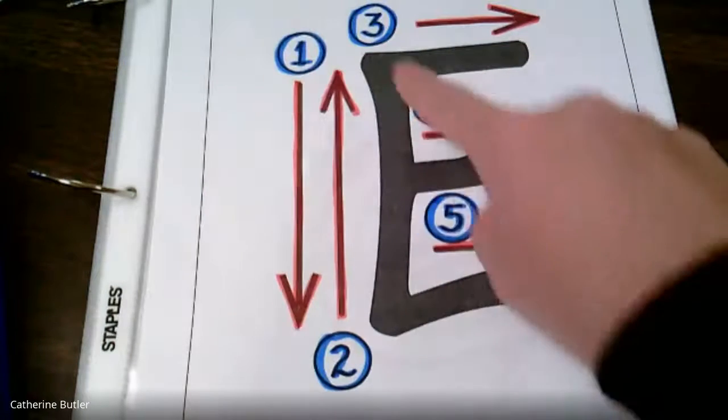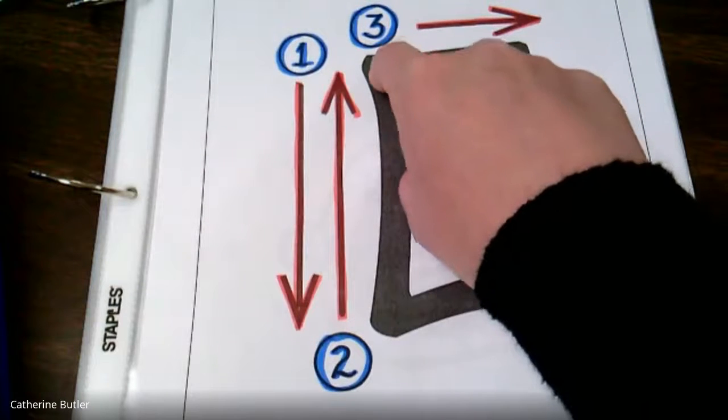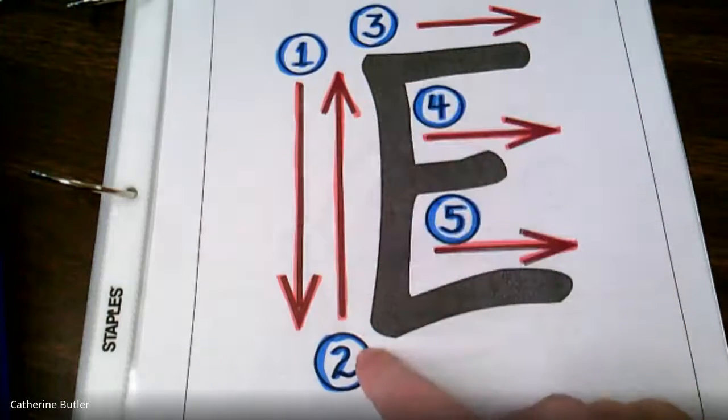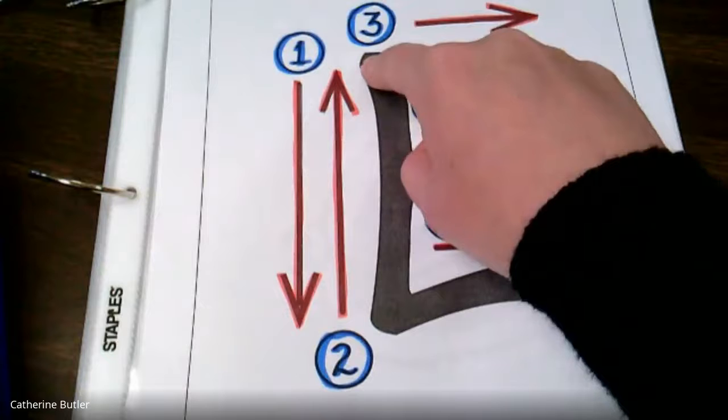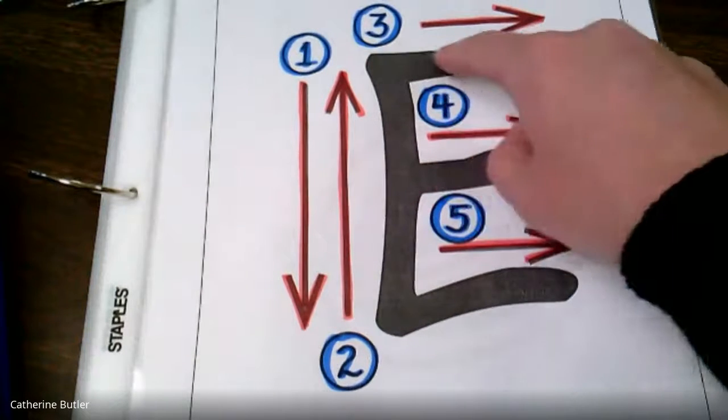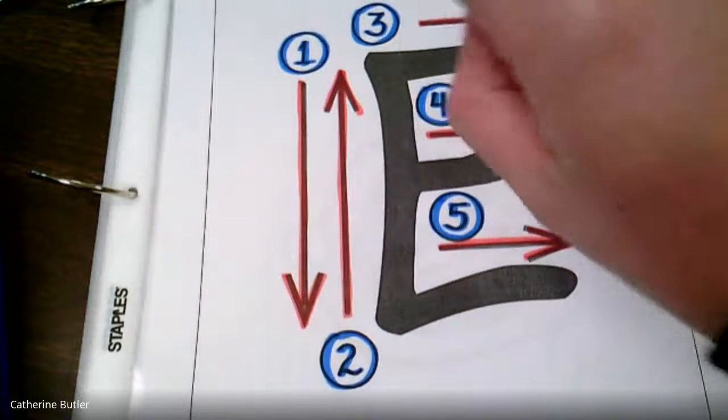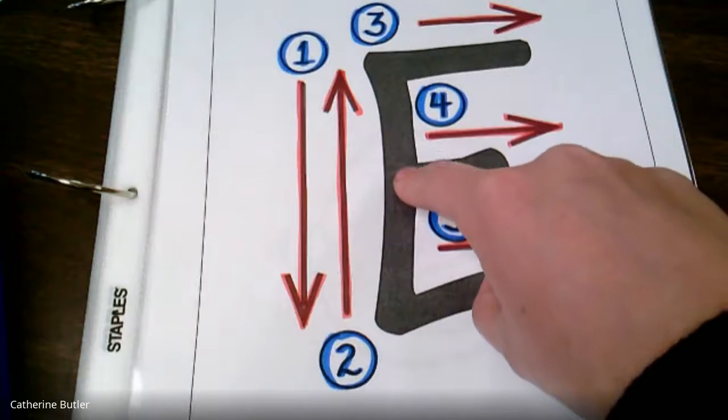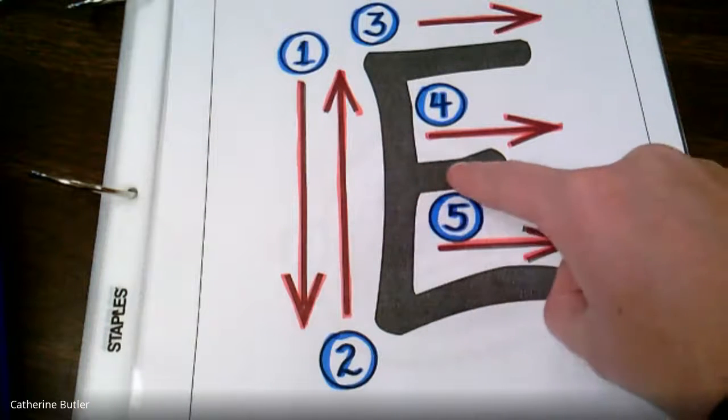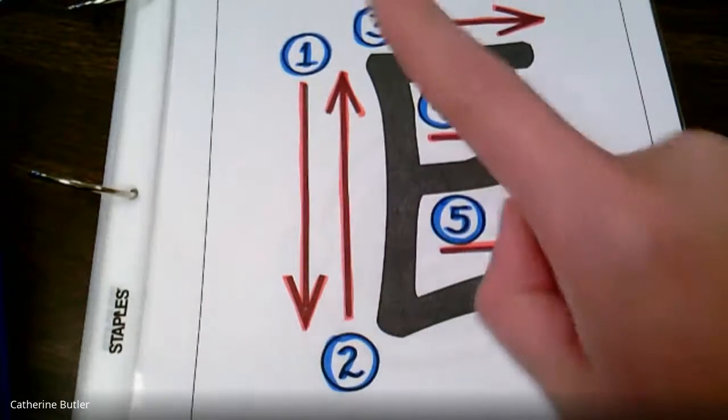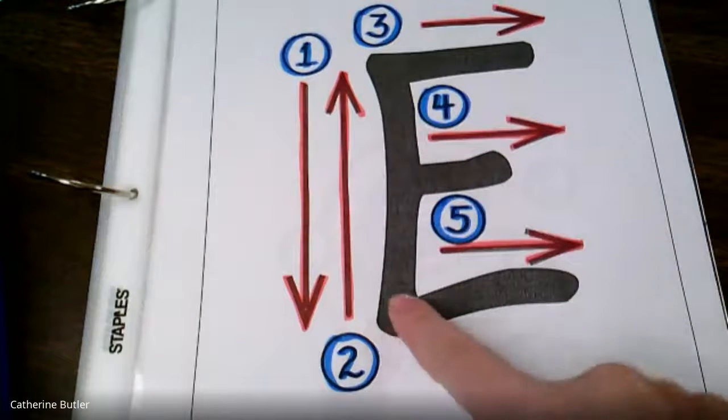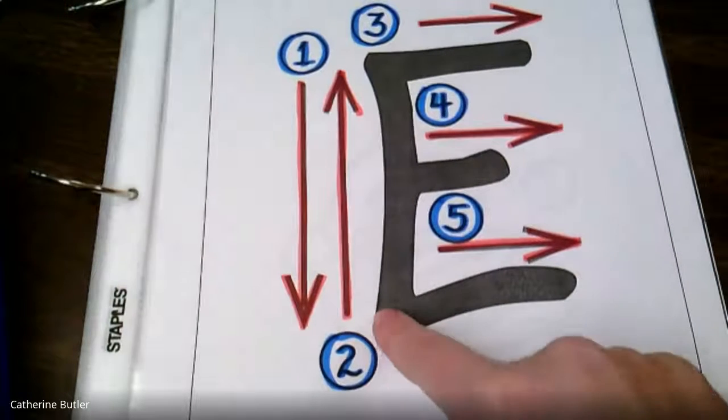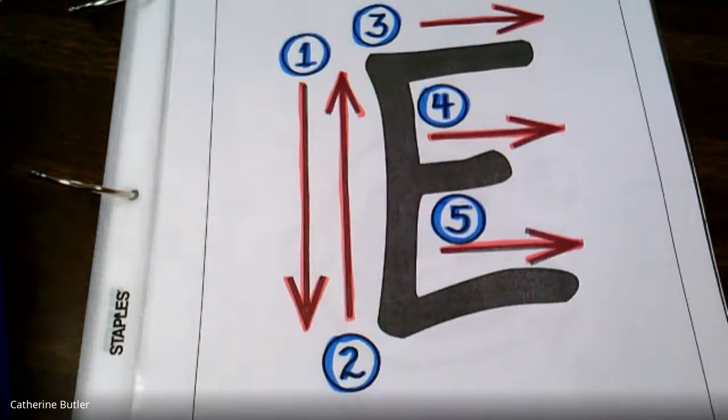So Miss Butler is going to take her finger, she's going to put her finger at the top, and I'm going to make a line down, go back up, make a little line out, then I'm going to pick my finger up, go to the middle of my line down, and I'm going to make a line across, little one, pick my finger up, go to the bottom of my line, and make a line across. Yeah, great job.